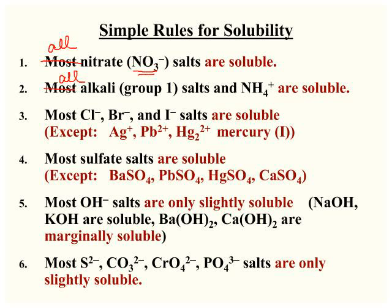All alkali or group 1 metal salts and all ammonium salts are soluble. Most chlorides, bromides, and iodides are soluble. There are some exceptions: silver, lead(II), and mercury(I) chlorides, bromides, and iodides are insoluble.